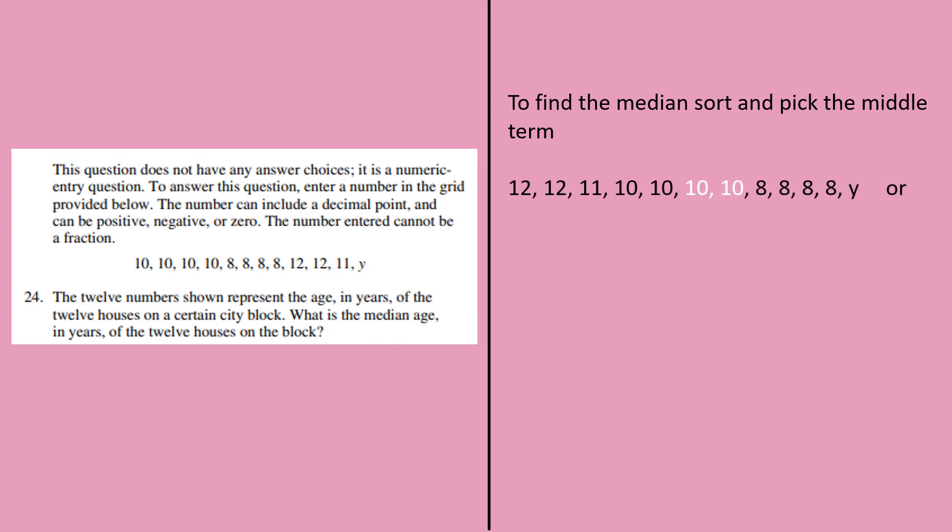When we sort them out, maybe we can sort them out like this because Y is a single digit. Y can be either less than 8 or it can be greater than 8. It can lie between 10 and 8. I can take Y to be after 8 or in between 10 and 8. So I have these two options.